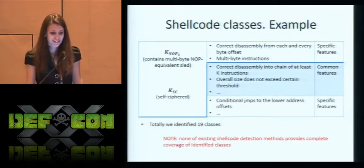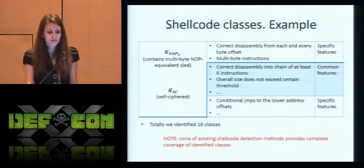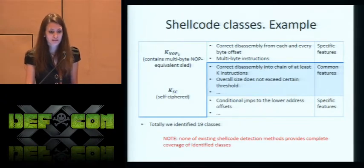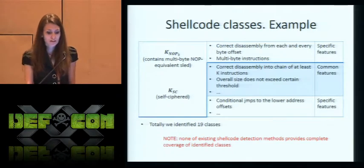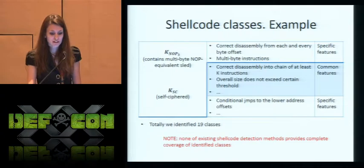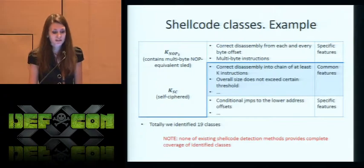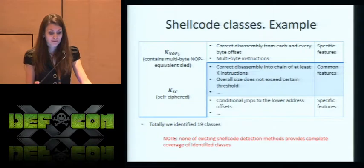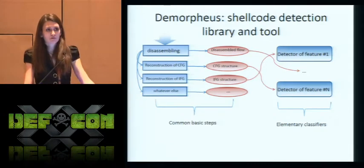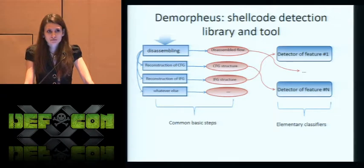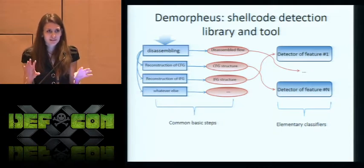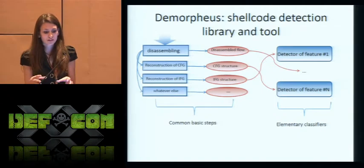Here's an example. We could name specific features such as correct disassembly from each offset byte of a set, or the existence of a multi-byte instruction. We could name common features such as correct disassembly into a chain of at least five instructions. In total, we identified 19 classes. A significant remark: none of the existing shellcode methods provide complete coverage of the identified classes. During analysis of existing methods, we noticed that almost all of them could be presented as some kind of combination of elementary classifiers or detectors of specific shellcode features.